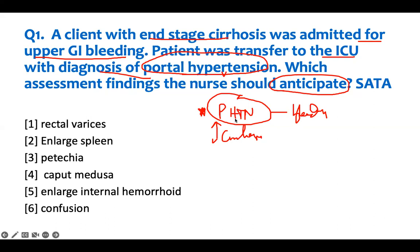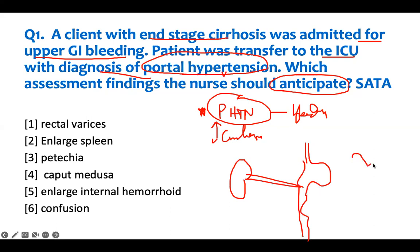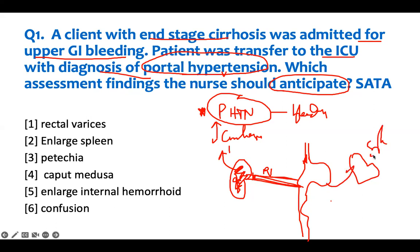You can have cirrhosis and may not have portal hypertension — same concept as before. Portal hypertension means the portal vein drains everything from the gut and spleen to the liver, which then sends it to the heart. If the liver is obstructed from fibrosis, blood pressure increases in the portal vein — that's portal hypertension. Blood cannot reach the heart through the liver, so it finds alternate routes: small veins in the skin, the rectum, esophageal varices, and the spleen. The spleen gets bigger and sucks up all your platelets, so platelet count drops.